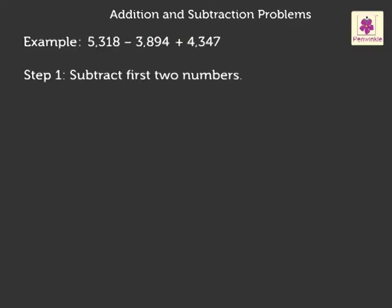So, let us subtract the numbers 5,318 minus 3,894. By subtracting these numbers, we get the answer as 1,424.